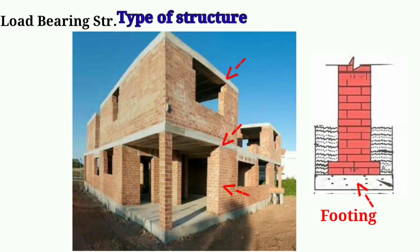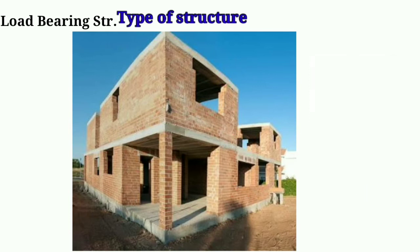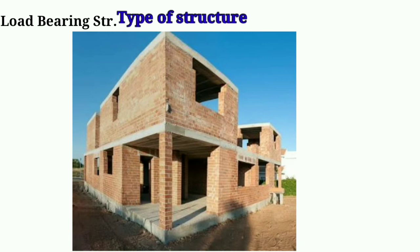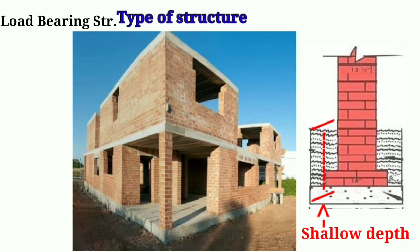Hard strata is a high density soil which has the capability to resist the load of structures and prevent settlement. Load bearing structures are economical up to two storeys, but can be constructed up to four storeys. As the height increases, the wall thickness must increase to effectively transfer load, reducing usable floor area. Load bearing structures are suitable only where hard strata is available at shallow depth. Nowadays, only less important work is constructed using load bearing structures.